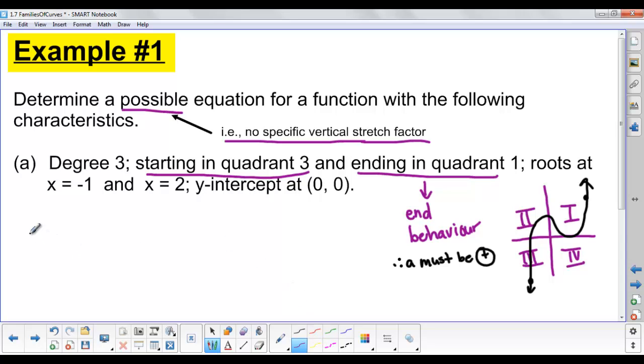Let's start setting up our equation. So y equals some stretch factor a. It tells us we have roots at -1, so x plus 1 in the bracket. Another root at x equals 2, so x minus 2. Then it says we have a y-intercept at (0,0). Our x value is 0, that gives us another root, so we can just call that x.